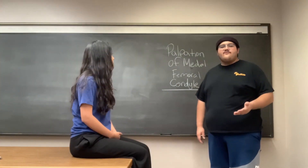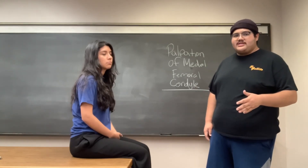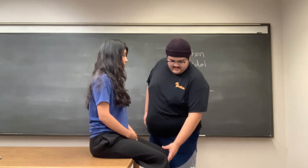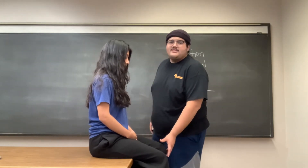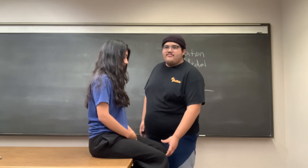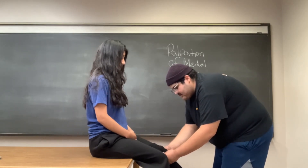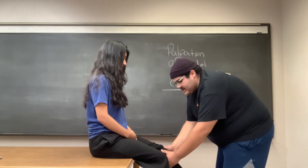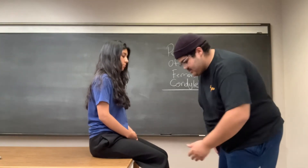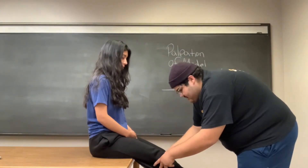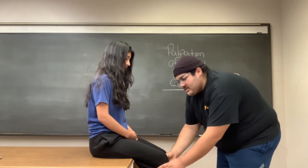In the eighth part of the video assignment, I will be palpating the patient's medial femoral condyle. In order to find it, we need to find the joint line — flex their knee to locate it. Now that I've located the joint line, I am going to move my fingers upward toward the patella and find the medial femoral condyle on the medial side of the patient's leg, right next to the patella. Now we perform this bilaterally — find the joint line, straighten out, move up, and find the medial femoral condyle on the medial side of the leg.